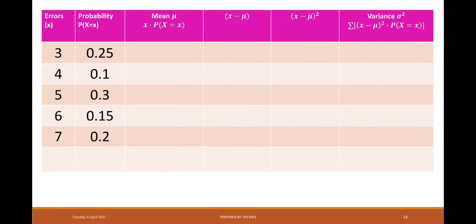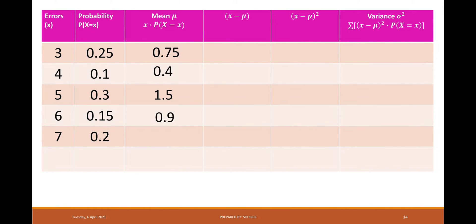Another way to solve for the mean, variance, and standard deviation is by making a table. In the third column, we write the products x × P(x): 3 × 0.25 = 0.75, 4 × 0.1 = 0.4, 5 × 0.3 = 1.5, 6 × 0.15 = 0.9, and 7 × 0.2 = 1.4. To find the mean, get the summation of the third column, which equals 4.95. Therefore, the mean is 4.95.